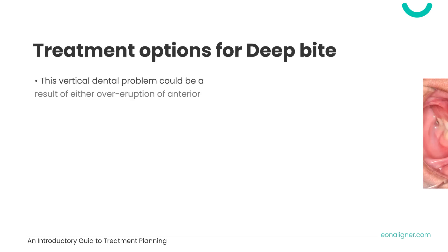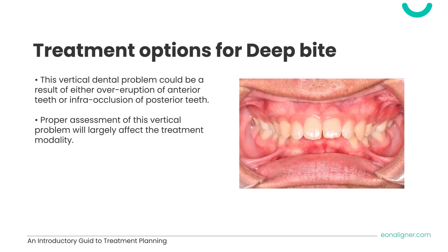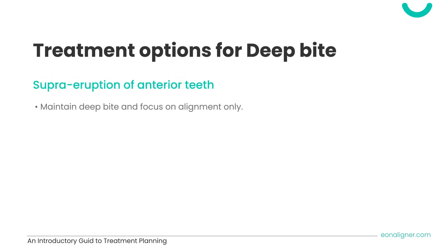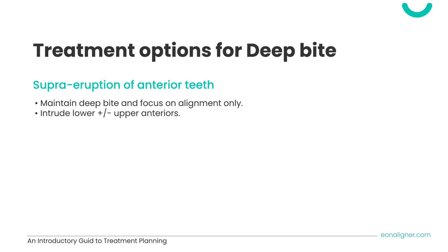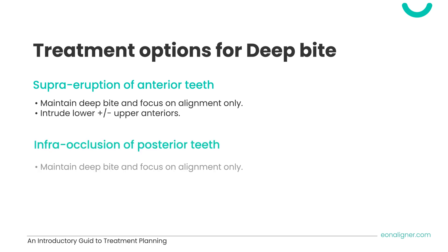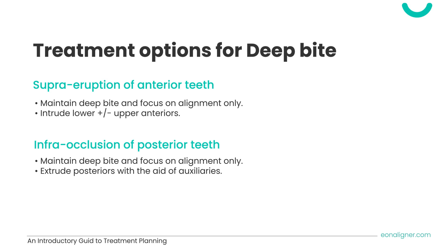Moving on to discuss treatment options for deep bite with EON aligners. Before deciding how to treat deep bite, we need to understand the reason behind this vertical dental problem. It can result either from over-eruption of anterior teeth or infra-occlusion of posterior teeth. If the problem is over-eruption of anteriors, treatment options include maintaining the deep bite with aesthetic alignment only, or intruding the lower and/or upper anterior teeth. If the problem is infra-occlusion of posteriors, we can accept and maintain the deep bite, or address it by extruding posterior teeth, possibly with auxiliaries.